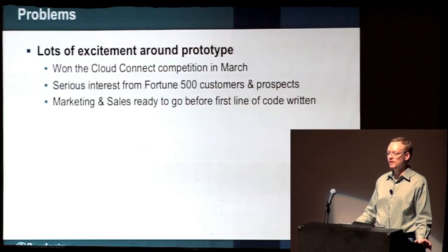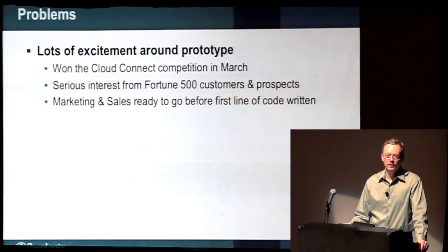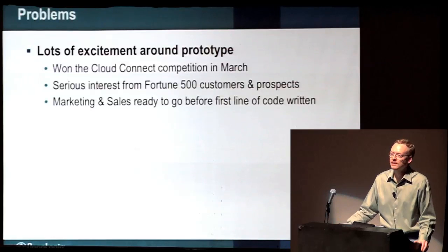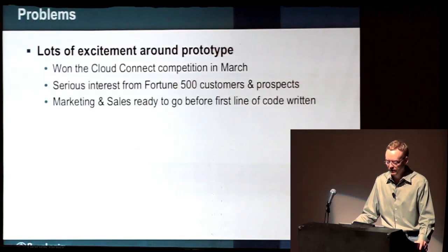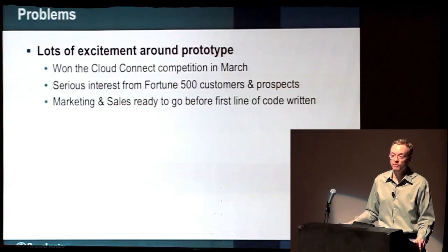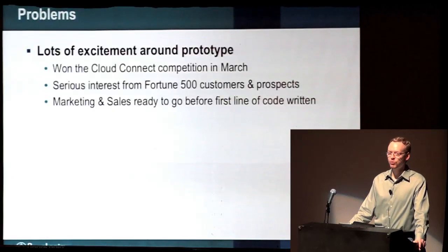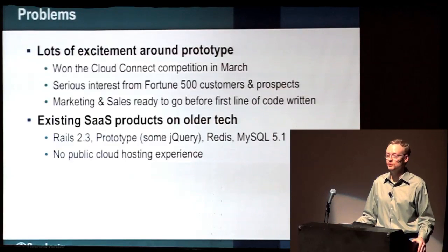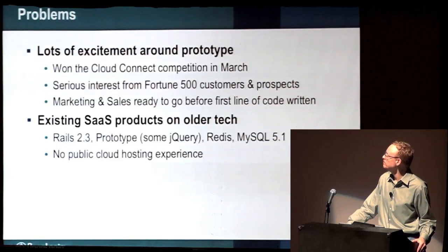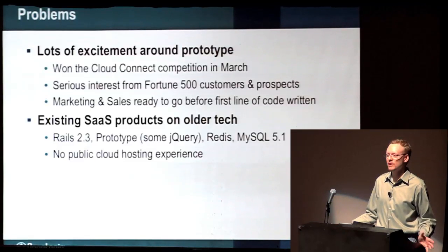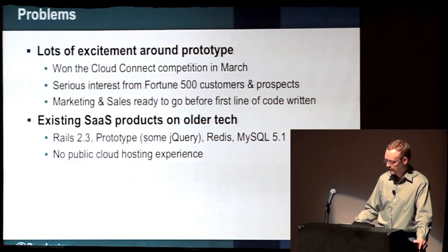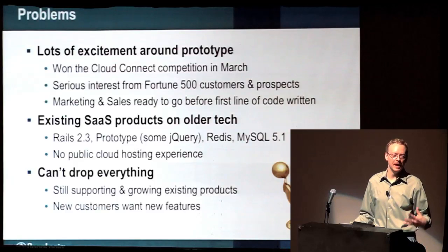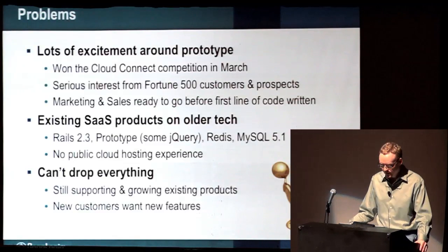Some of the problems: there was a lot of excitement around the prototype I wrote. We won a Cloud Connect competition in March, which gave us a lot of attention. We have a lot of Fortune 500 customers who were interested in what we were doing with the cloud, so marketing and sales said, 'Can we sell this today?' before we wrote the first line of production code. All our existing SaaS products had been in production four years on Rails 2.3, used some jQuery, Redis, and MySQL. We hadn't been on the cloud yet, and we couldn't drop everything — we still had existing products and customers, and it's not a big team.